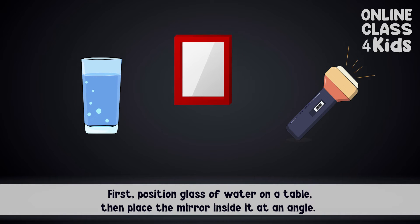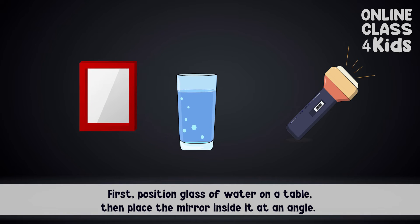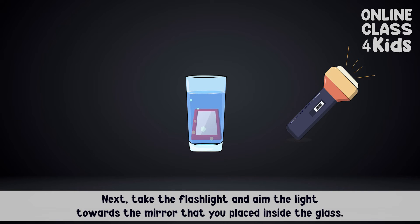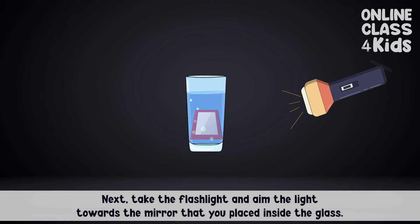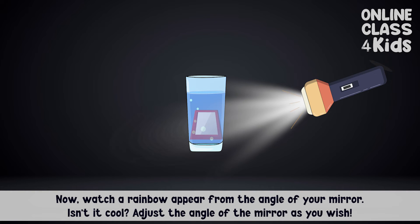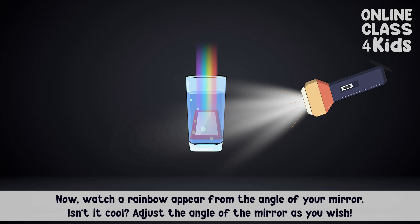First, position a glass of water on a table. Then place the mirror inside it at an angle. Next, take the flashlight and aim the light toward the mirror you placed inside the glass. Now, watch a rainbow appear from the angle of your mirror. Isn't it cool? Adjust the angle of the mirror as you wish.